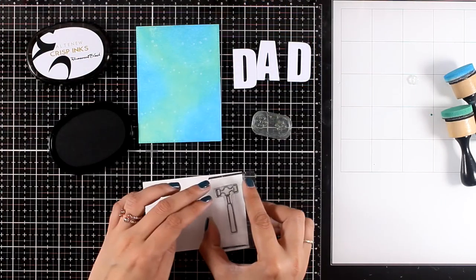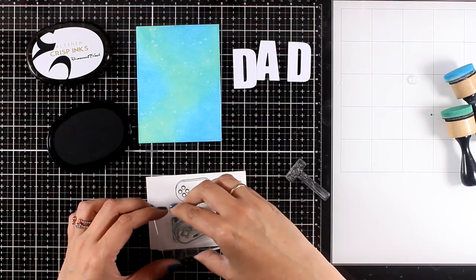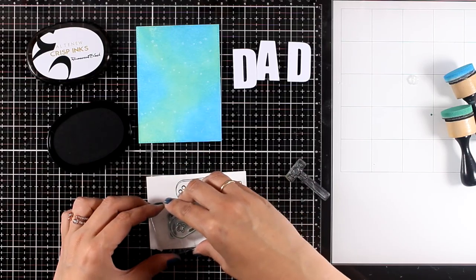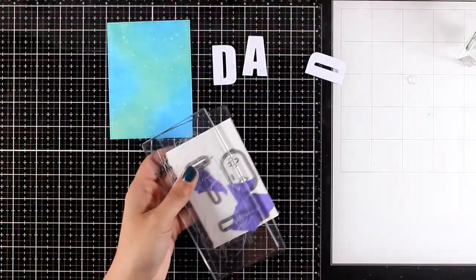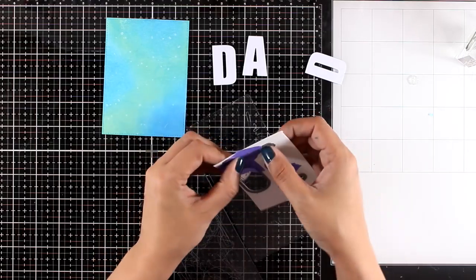Now I'm just stamping a few of the images included in the Best Dad stamp set. I'm running them through my mini Blossom die cutting machine to cut them out with the matching dies.